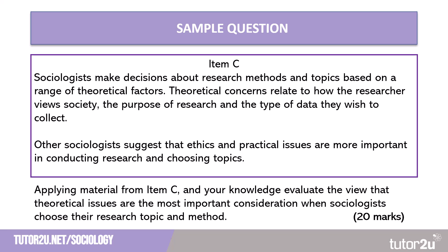It is a 20-mark question and it asks students to apply material from Item C and their knowledge. Evaluate the view that theoretical issues are the most important consideration when sociologists choose their research topic and method. The item states that sociologists make decisions about research methods and topics based on a range of theoretical factors. Theoretical concerns relate to how the researcher views society, the purpose of research, and the type of data they wish to collect. Other sociologists suggest that ethics and practical issues are more important in conducting research and choosing topics.